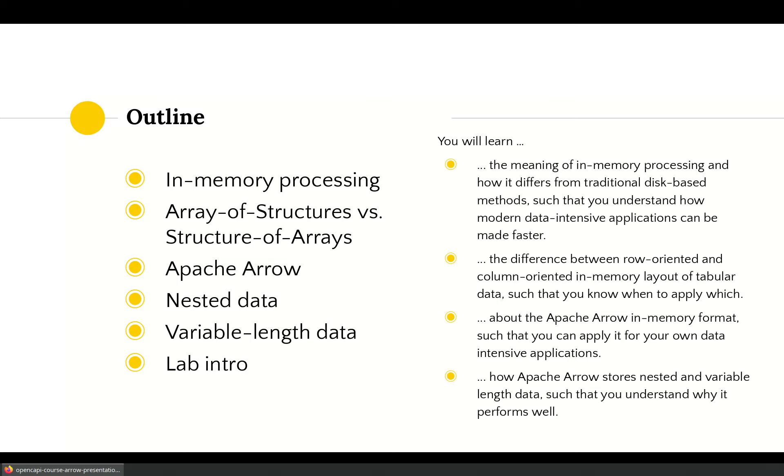We will then introduce the Apache Arrow project where the column-oriented layout is applied and go over additional benefits that the project provides. We will dive deeper into Apache Arrow and briefly show how nested and variable length data is efficiently laid out in memory. Finally, we will introduce a short lab that can help you get a feeling of how much computational performance can be gained by using Apache Arrow.